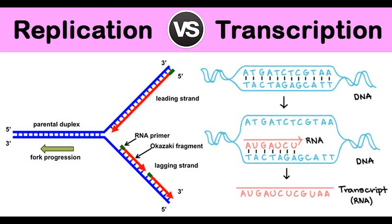In our previous video, The Structure of DNA, we mentioned how DNA replicates in a semi-conservative fashion. This means that, when DNA replicates, one strand is used to build the other complementary strand. Remember that this means adenine pairs with thymine, or uracil in RNA, and cytosine pairs with guanine, in what is called Watson-Crick pairing.